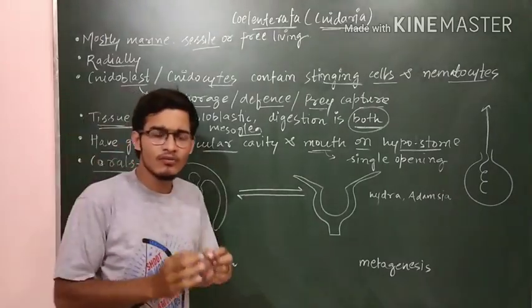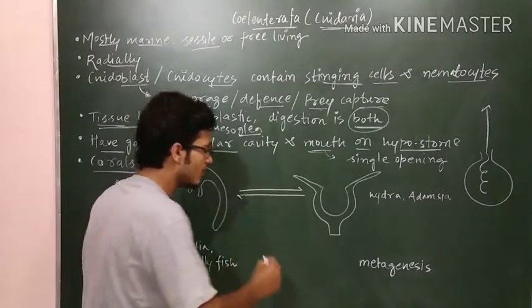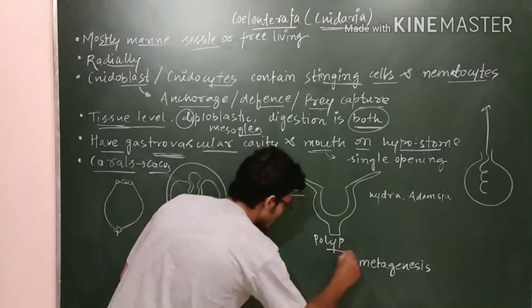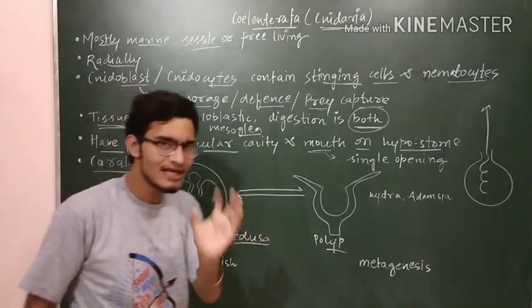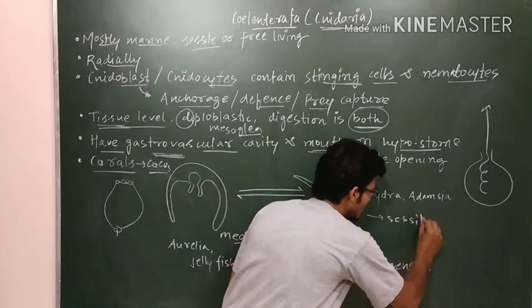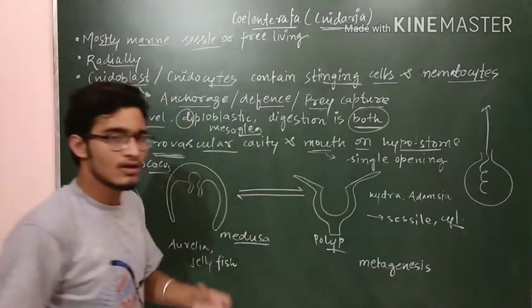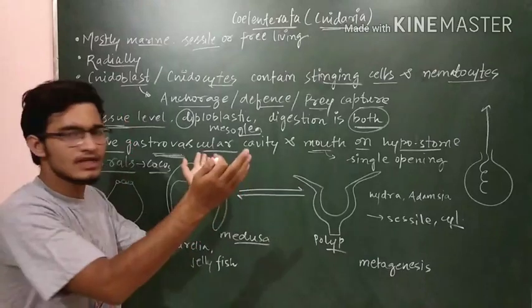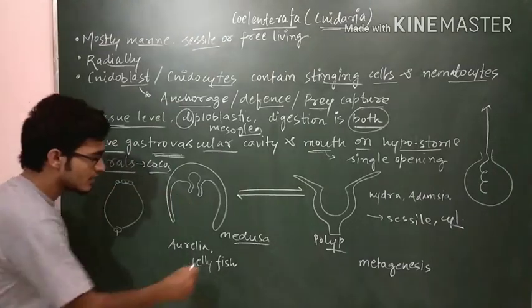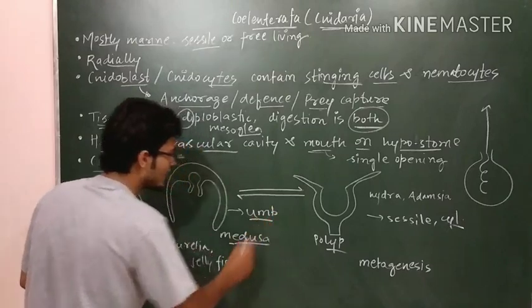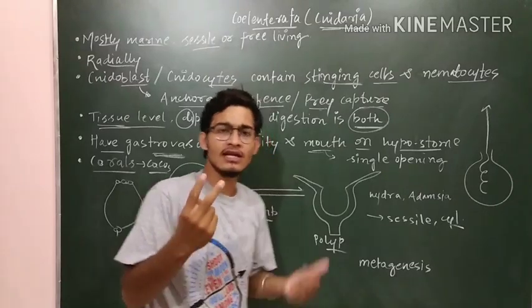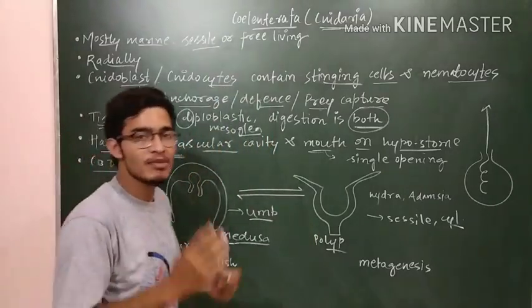There are two different types of body forms present in Coelenterata: polyp and medusa. Polyps are sessile - they cannot move freely - and are cylindrical in shape. Medusa is umbrella-shaped and is actively moving. These are the major differences: polyp is cylindrical and sessile, while medusa is umbrella-shaped and actively moving.